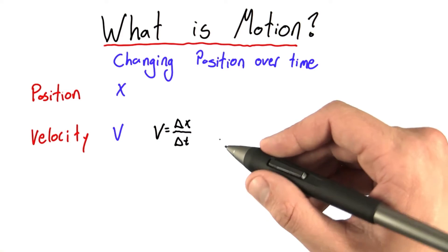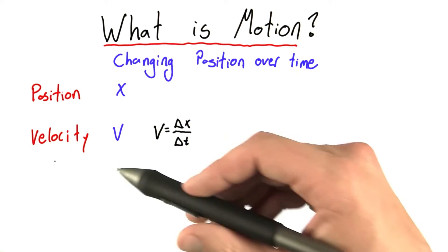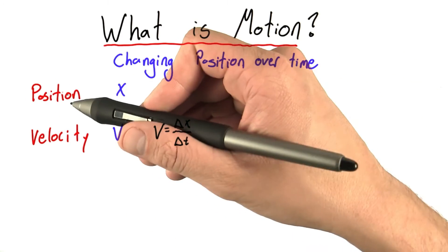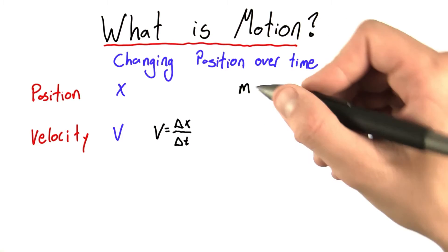Before we go any further, let's also talk about how we're going to measure these quantities. What units are we going to use? To measure position, we're going to use the unit meter, which we abbreviate m.